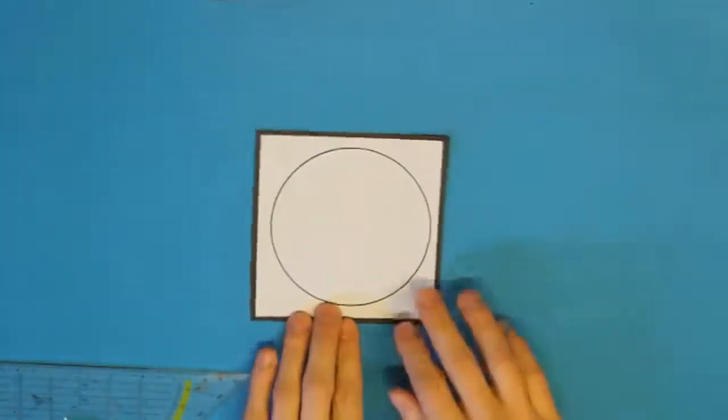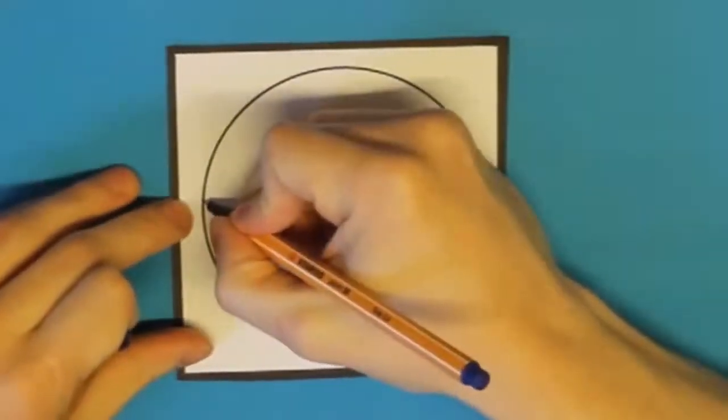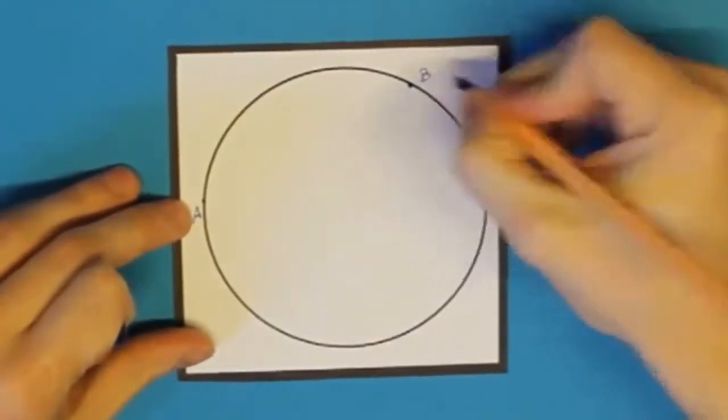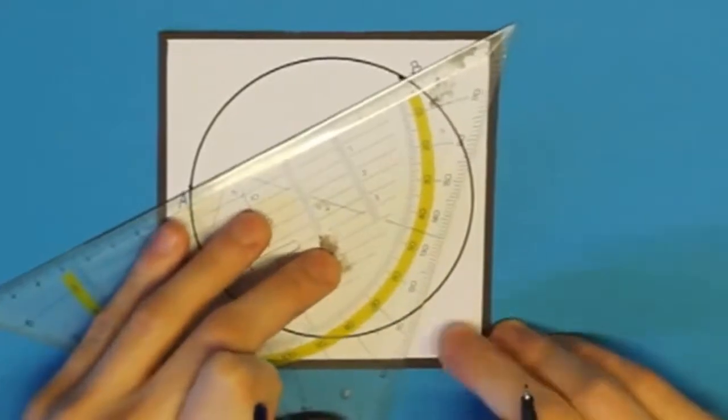So, und als nächstes sehen wir uns das Kreissegment an. So, dazu nehme ich jetzt einmal einen neuen Kreis und wir markieren uns als erstes zwei Punkte auf der Kreislinie. Die beschrifte ich auch gleich mit A und mit B. Und jetzt verbinden wir diese Punkte.